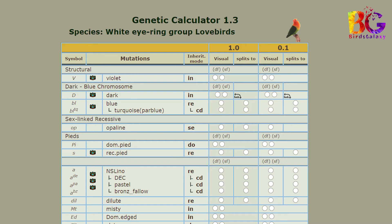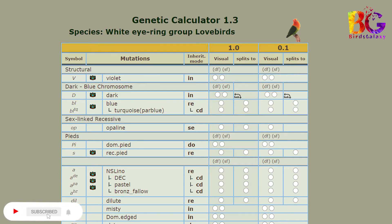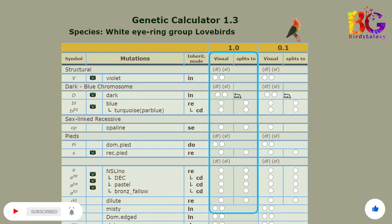In the fourth column there are two options: visual and splits. Visual means visible to the eye. And splits mean splits, or contain — split what? Genetic, or anything that contains that isn't visible.